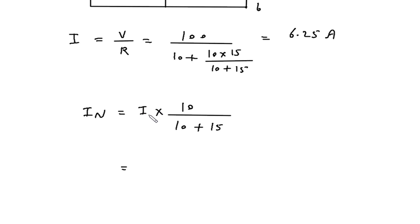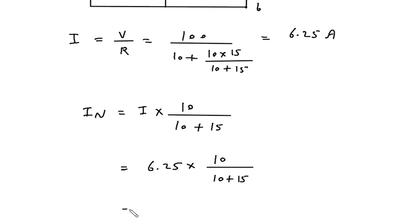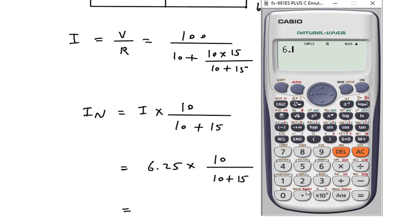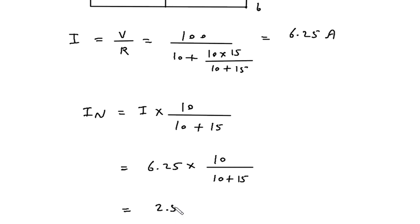From this, In is equal to total current I, that is 6.25, multiplied by 10 divided by 10 plus 15. 6.25 multiplied by 10 divided by 10 plus 15. So it is 2.5 Ampere. 2.5 Ampere is the value of In.